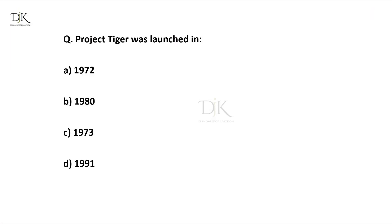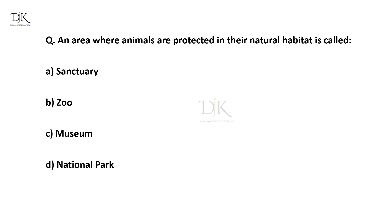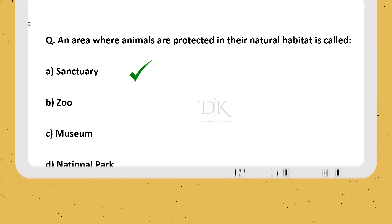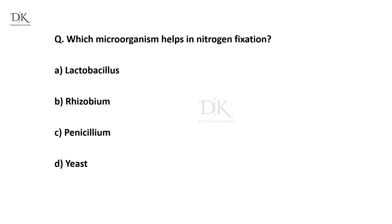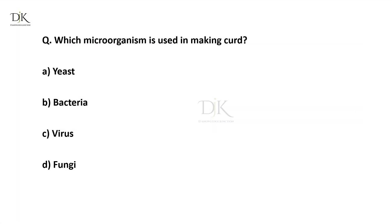Project Tiger was launched in? The right answer is 1973. An area where animals are protected in their natural habitat is called? The right answer is Sanctuary. Which microorganism helps in nitrogen fixation? The right answer is Rhizobium. Which microorganism is used in making curd? The right answer is Bacteria.